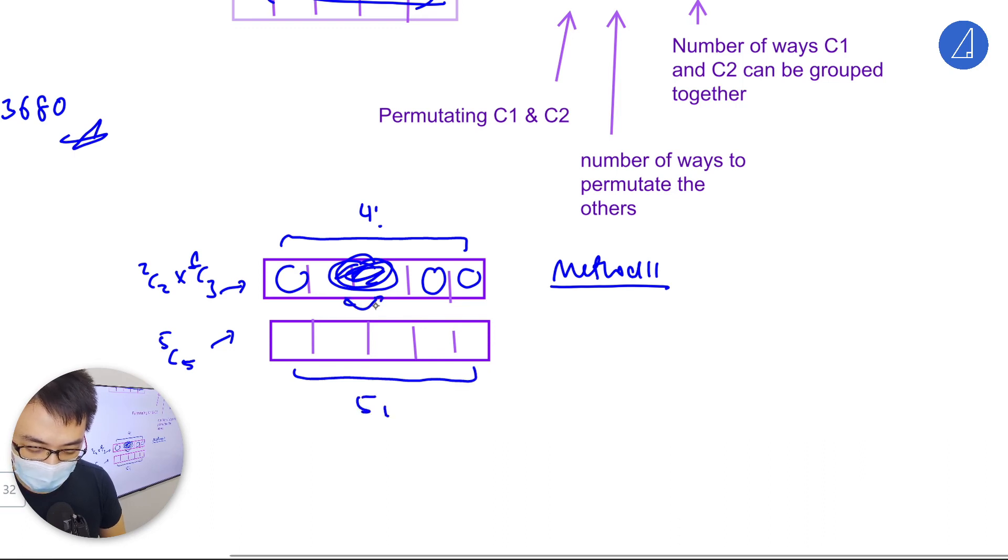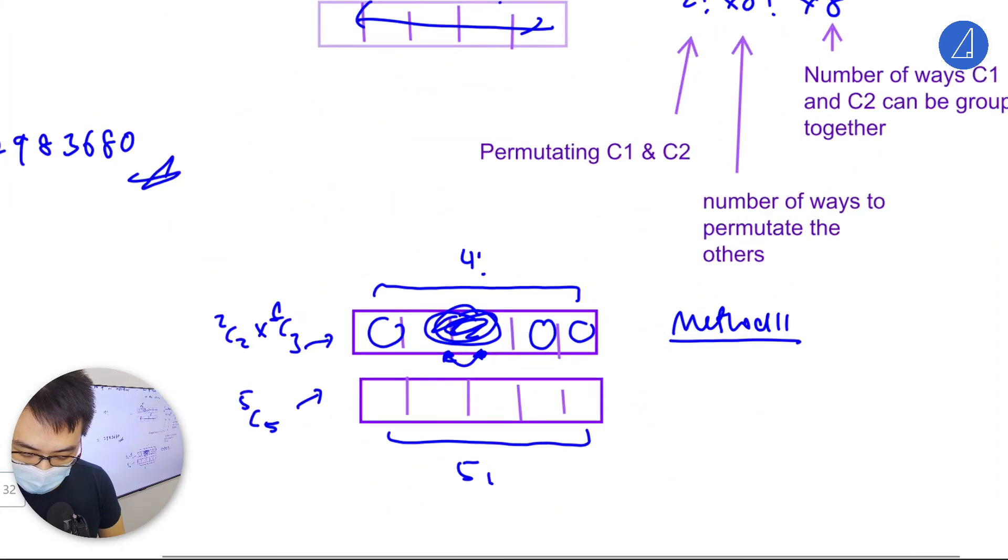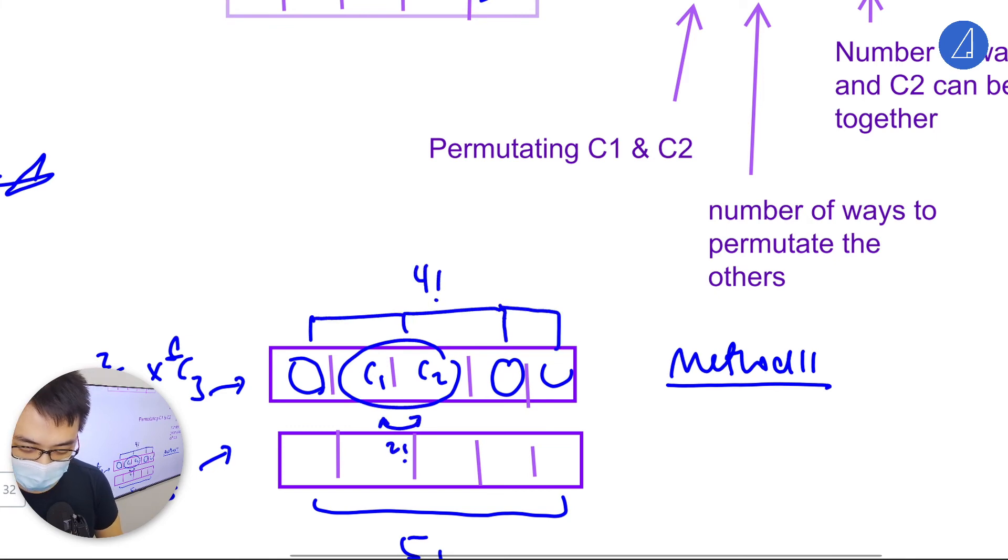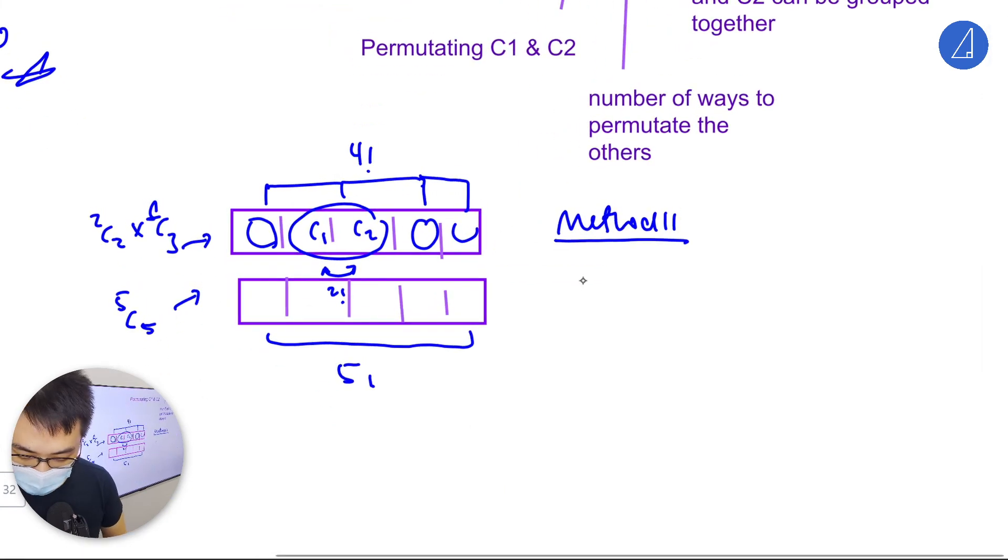But among them you can do 2 factorial. Among this C1, C2 group, you can just do 2 factorial. This is four entities. It's good to have a few tricks up your sleeve. So this is 2 choose 2 times 8 choose 3 times 4 factorial times 2 factorial times 5 factorial. Then don't forget, C1 and C2 have two rows, so you can times 2.